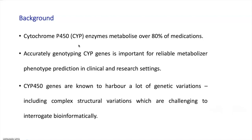CYP genes are known to harbor a lot of genetic variation, and these are phased into two haplotypes, commonly known as star alleles. These star alleles could also include structural variations, which are challenging to interrogate bioinformatically.